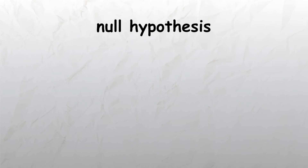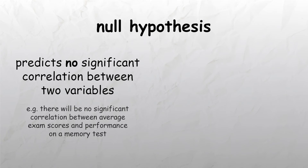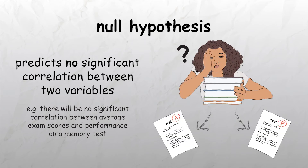When conducting a correlation, it is important to have either a one-tailed or two-tailed hypothesis and a null hypothesis. A null hypothesis predicts that there will be no significant correlation between the two variables. For example, there will be no significant correlation between average exam scores and performances on memory tests. The reason researchers have a null hypothesis is that the statistical tests we use are designed to test the null hypothesis.